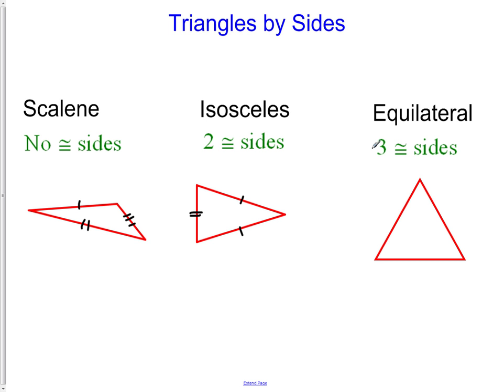Lastly, we have the equilateral triangle. With the equilateral triangle, we have three sides all congruent. So all three sides of our triangle are congruent.